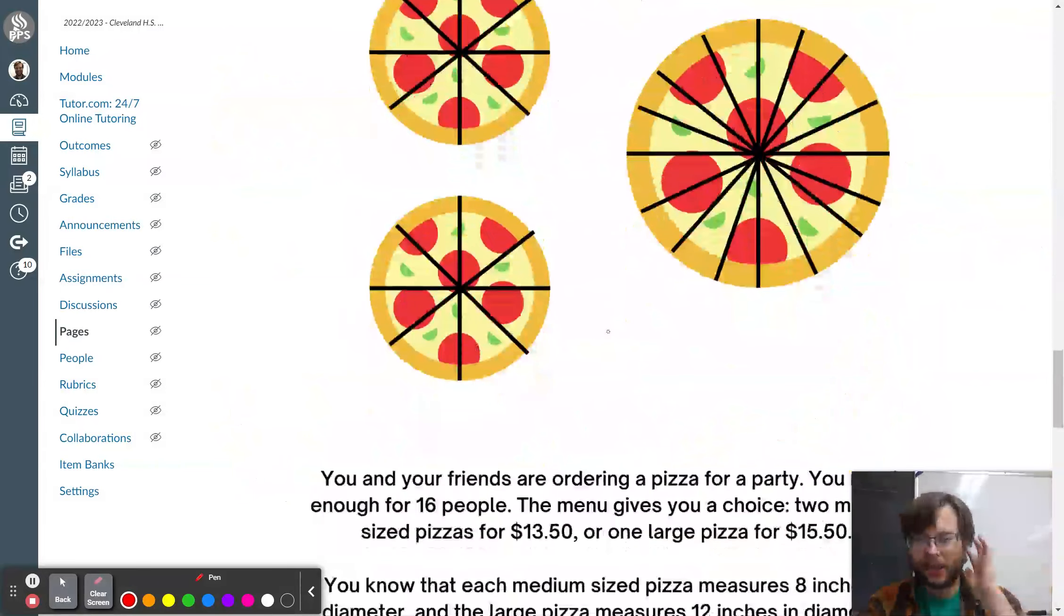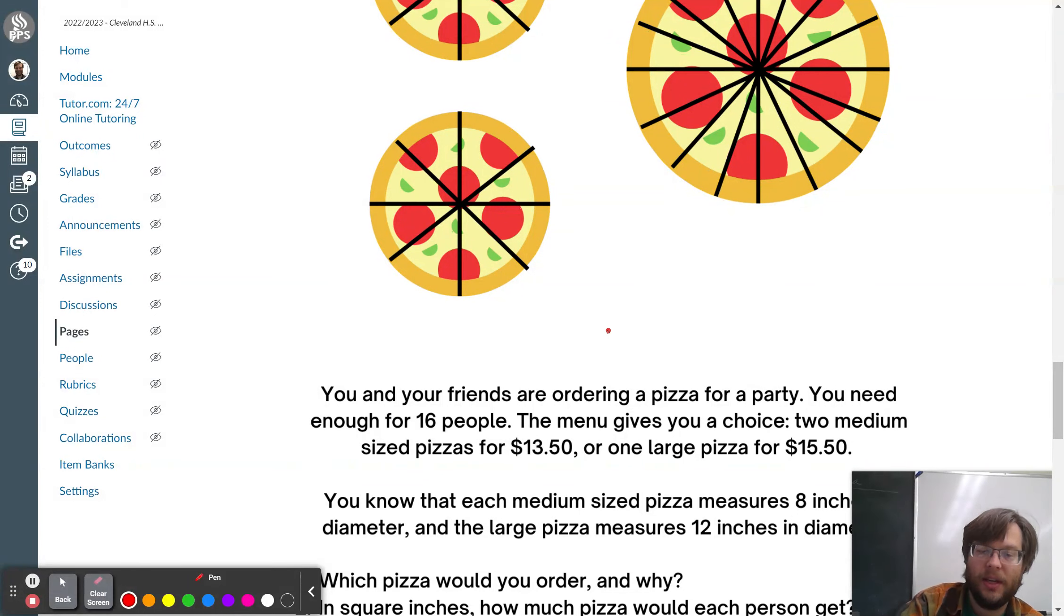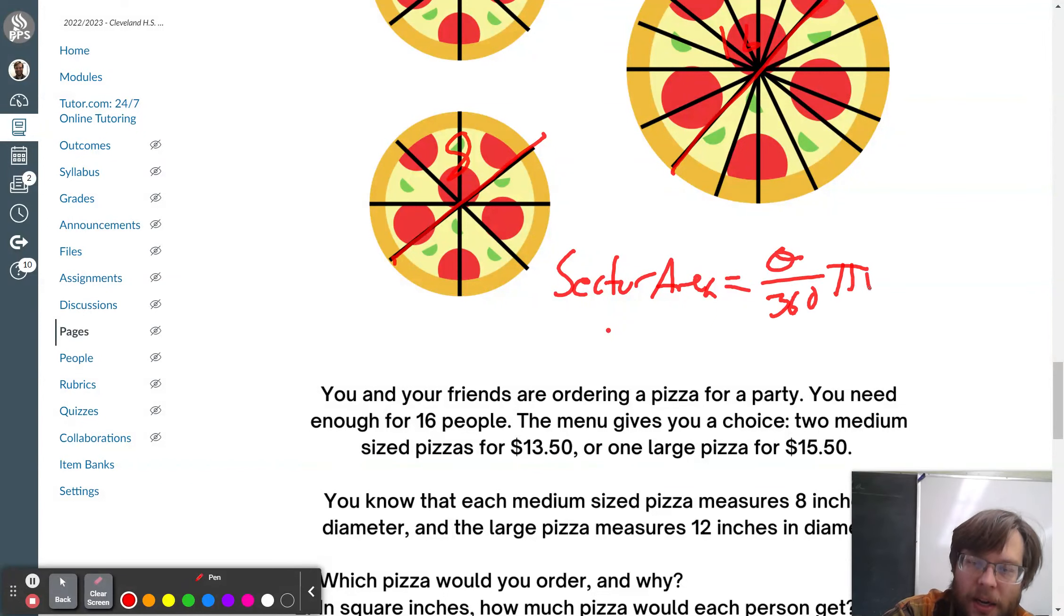Then the next one, sector area here. We got pizza. Two medium pizzas for $13.50 or one large pizza for $15.50. And the mediums are 8 inches in diameter. And this is 16. If we order the medium pizzas, then each slice is an eighth of a pizza. So, that would be 45 degrees. So, you can do this two ways. You can use our sector area formula, which is just angle over 360 times pi r squared. Or you can think of it as one-eighth of a pizza.